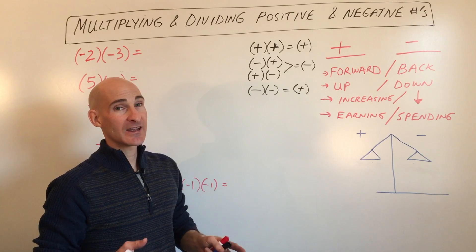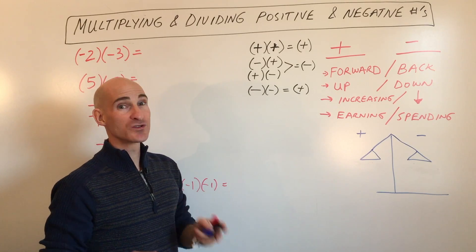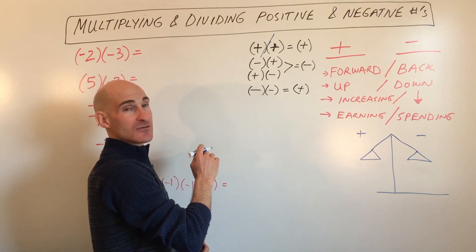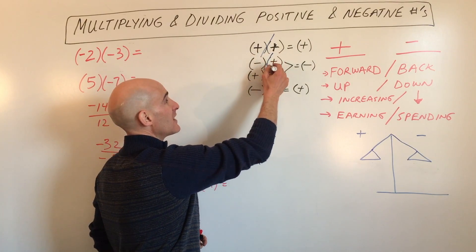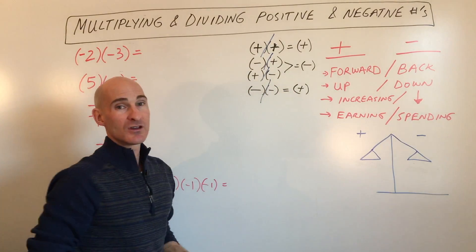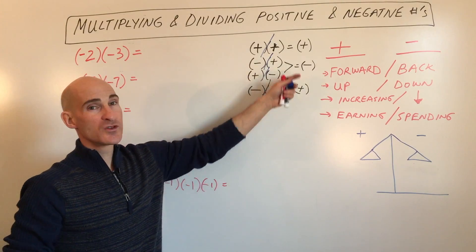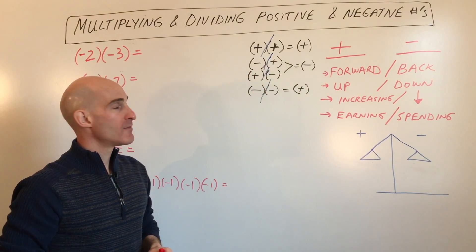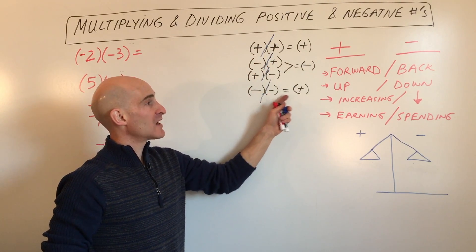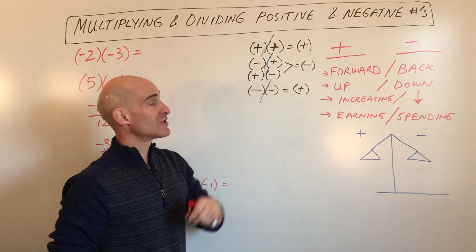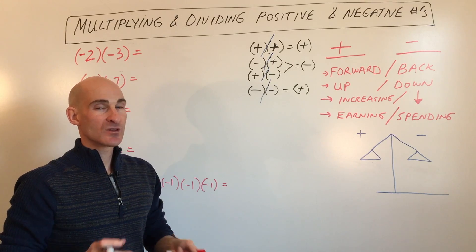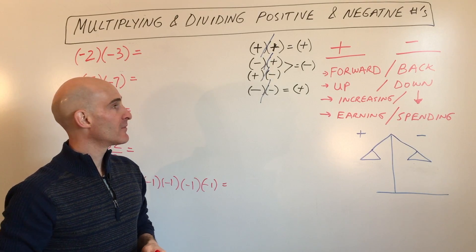The nice thing about multiplying and dividing is that the rules are the same. If you divide a positive by a positive, you get a positive. If you divide a negative and a positive, you get a negative. And if you divide a negative by a negative, you get a positive. You can group these rules together so there's not that much to memorize. Two negatives give you a positive, and if one's positive and one's negative, you get a negative. You don't want to confuse the rules for adding and subtracting with those for multiplying and dividing — they are two different types of rules.